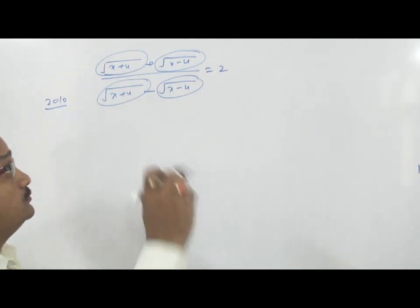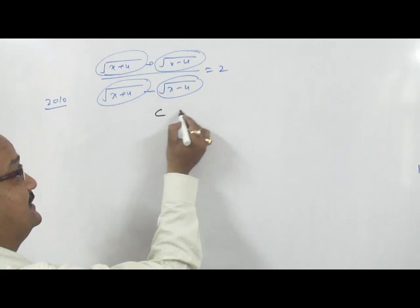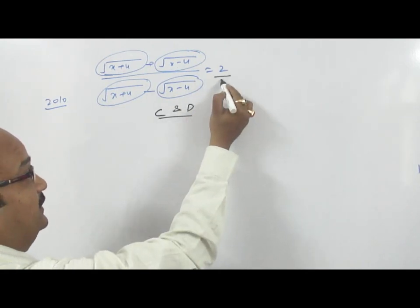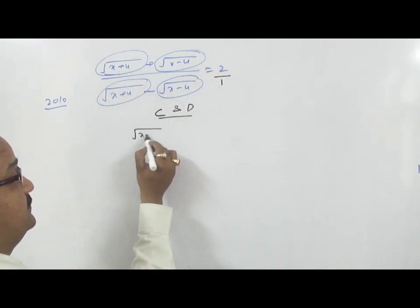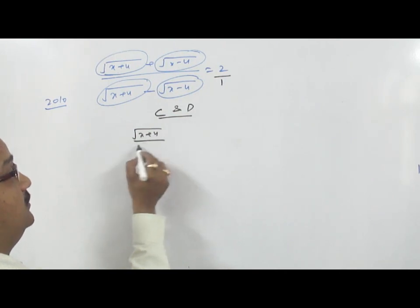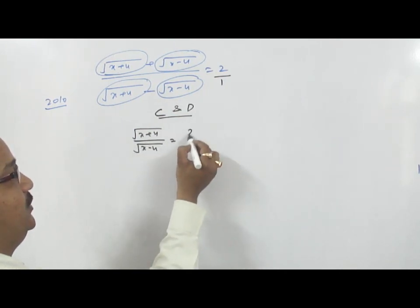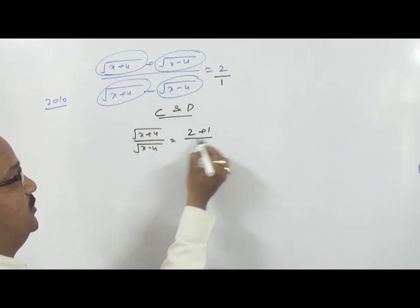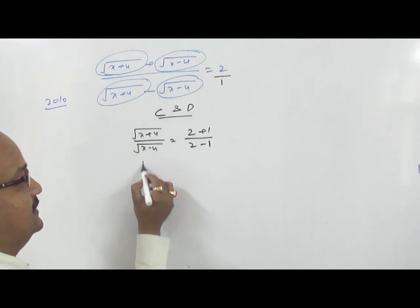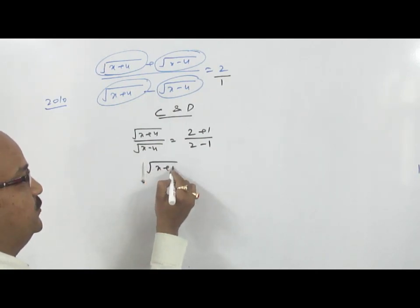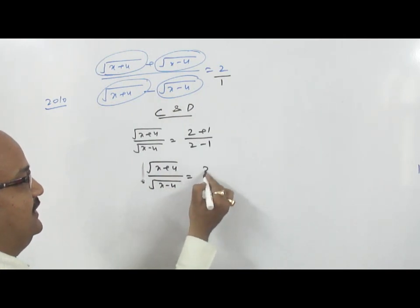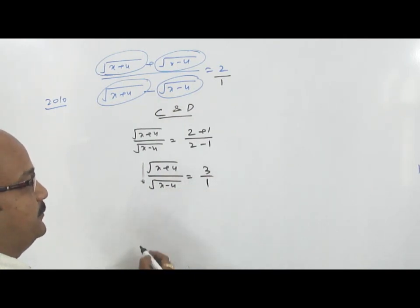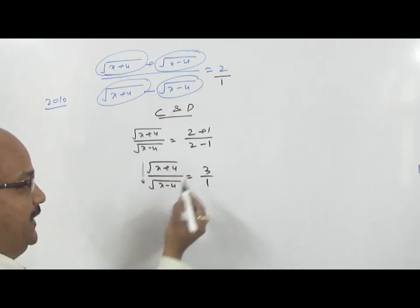Now what we will do — we will apply C and D. We will assume one part as root X plus 4 upon root X minus 4. It would become 2 plus 1 upon 2 minus 1, which gives root X plus 4 upon root X minus 4 is equal to 3 by 1.